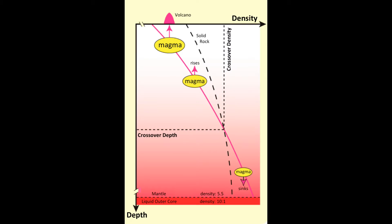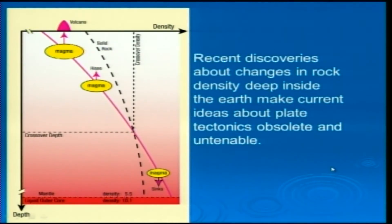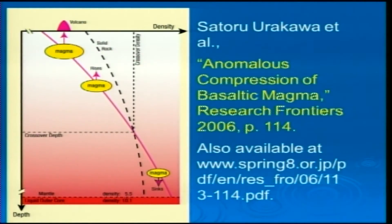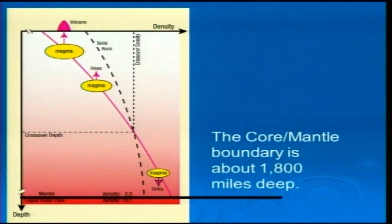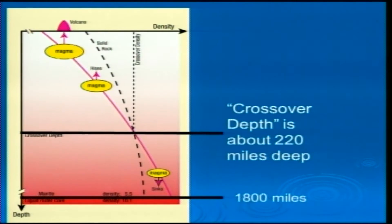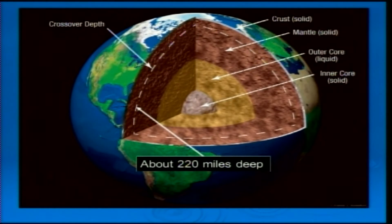Japanese secular scientists were the ones doing research on the melting of mantle minerals under pressure. They were studying what happens to minerals melted under extreme pressures to understand the inner Earth. They came up with this graph in 2006, published in an article titled 'Anomalous Compression of Basaltic Magma.' Christians didn't come up with this — creationists didn't come up with this. The core-mantle boundary is about 1,800 miles deep; the crossover depth is 220 miles — that dotted line.